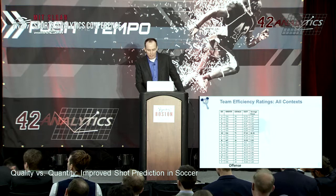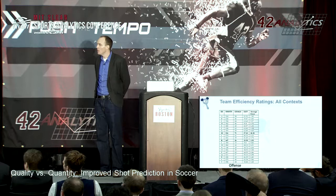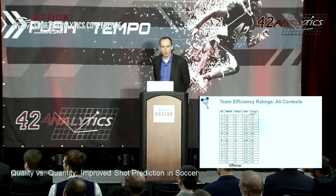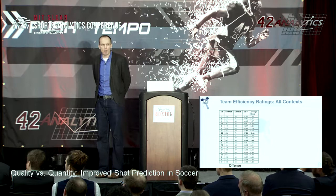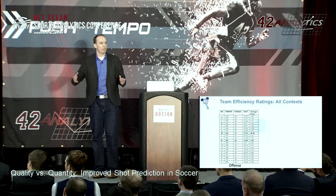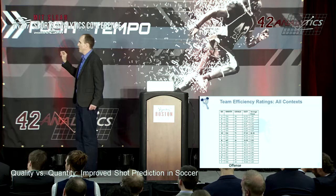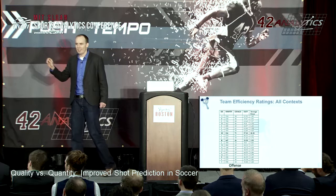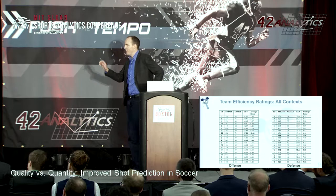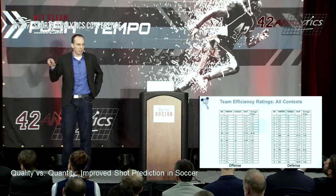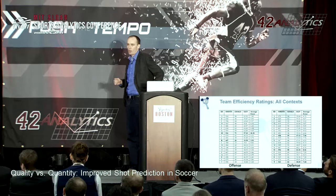Now we can do analysis in terms of teams — how efficient they are when attacking. Team H scored 71 goals but their expected goal value is 57, which suggests their strikers are more efficient than average. Team K only scored 26 goals but the expected goal value was 36, suggesting their strikers aren't as good as the league average. Defensively, we now have a metric to measure goalkeepers. Team T conceded 64 goals but should have conceded only 49 — if I'm the manager, I'd be looking at a new goalkeeper for next season.